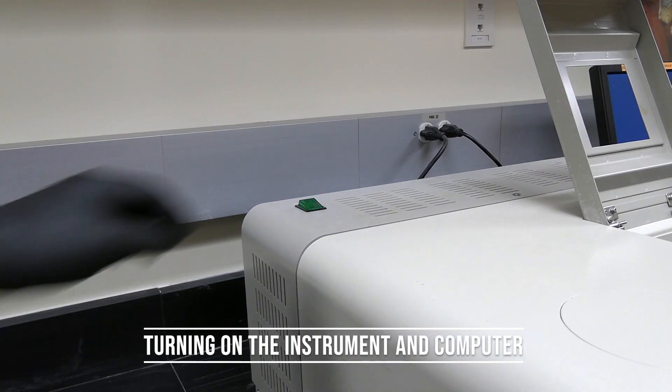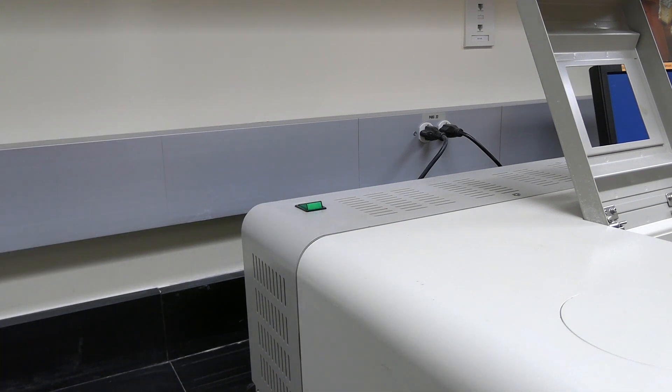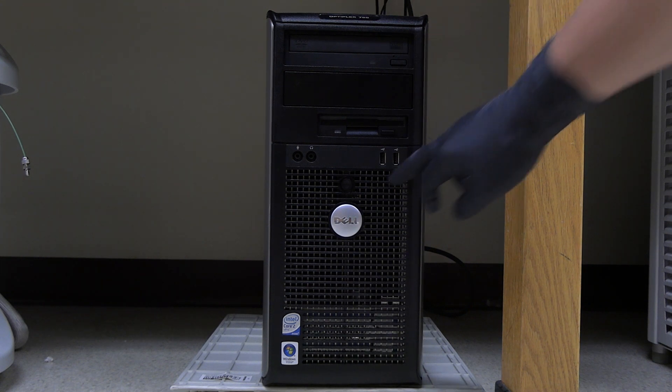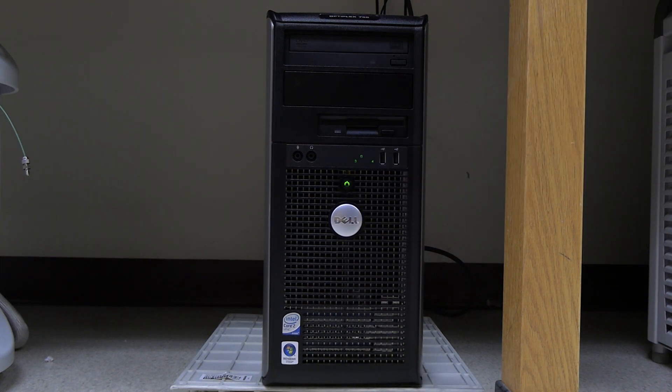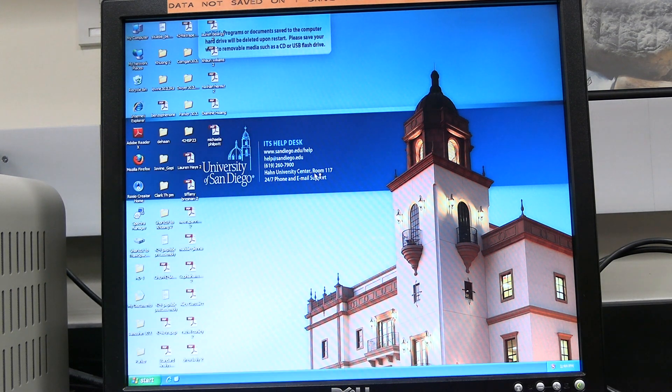Turning on the instrument. Flip the power switch on the top left back corner of the instrument. The switch light will turn on. On the computer, press the power button located in the middle of the tower. Log in to the computer. The username and password are found in the instrument SOP. Wait for the computer to start up.